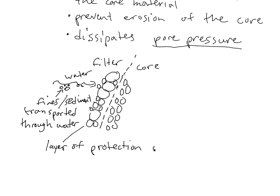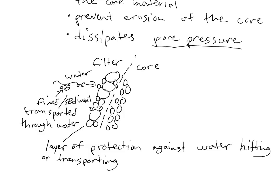So, based on the filter, we'll have a specific size that can't pass through and will get stuck. The water then dissipates here — pore pressure gets dissipated because of the filter. This means the core feels less pressure and has less material going through it, preventing erosion. The filter is basically a layer of protection against water forces and against water transporting sediment that would erode the dam.